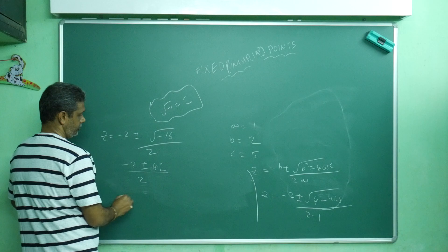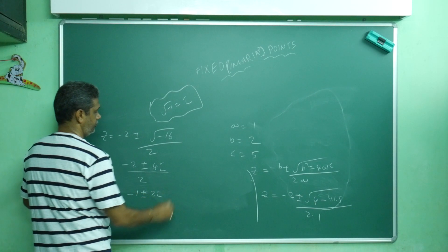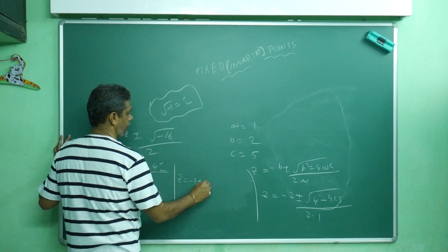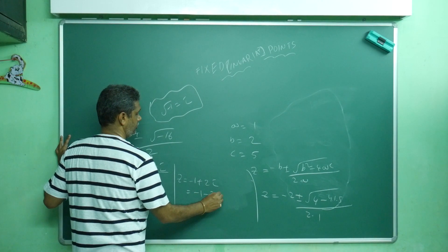Square root of minus 16 equals 4i. So z equals minus 2 plus or minus 4i divided by 2, which simplifies to z equals minus 1 plus 2i and z equals minus 1 minus 2i. These are the fixed points.